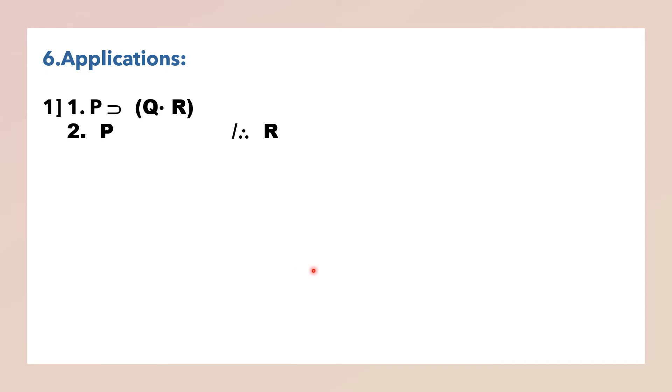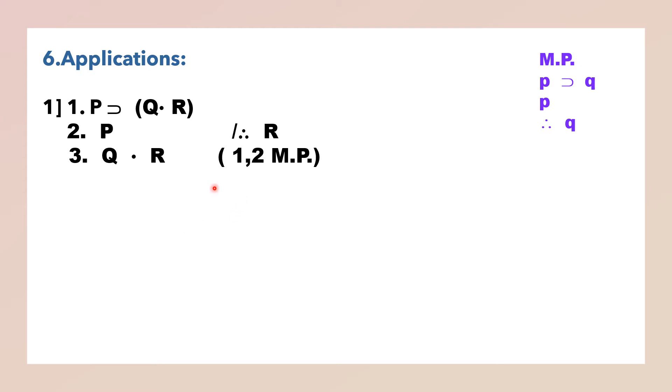Application: P implies Q dot R; P; therefore R. Let us see how to apply the rule of commutation. Which rule can you apply here? We want R. R is in the first premise — it is the consequent of this implicative statement. So you can derive the consequent by modus ponens: P implies Q; P; therefore Q. Now with P implies Q dot R, we can separate R only if it is on the left-hand side by simplification.